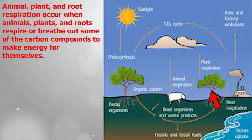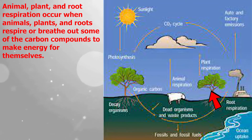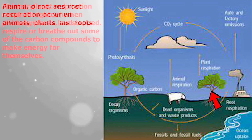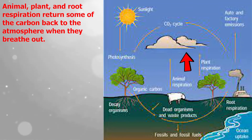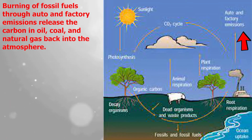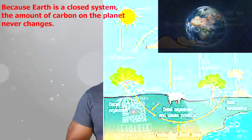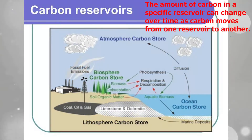Herbivores and other consumers feed on plants and trees and take in the organic carbon stored within the leaves and other parts of plants. Dead organisms and waste products are stored deep within the soil over millions of years and turn into fossil fuels. Animal, plant, and root respiration occur when animals, plants, and roots respire or breathe out some carbon compounds to make energy for themselves. Plant and root respiration occurs at night when photosynthesis has stopped. Animal, plant, and root respiration returns some carbon back to the atmosphere when they breathe out. Burning of fossil fuels through auto and factory emissions releases the carbon in oil, coal, and natural gas back into the atmosphere. Because Earth is a closed system, the amount of carbon on the planet never changes. However, the amount of carbon in a specific reservoir can change over time as carbon moves from one reservoir to another.